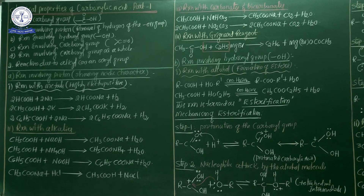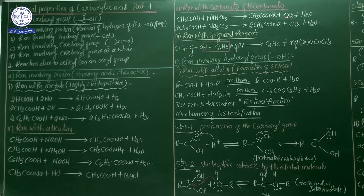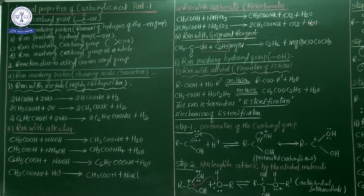If you take a little quantity of carboxylic acid and treat it with either sodium carbonate or sodium bicarbonate, carbon dioxide gas is released — this is the confirmation test of carboxylic acid. For example: CH₃COOH + NaHCO₃ → sodium acetate + CO₂ + H₂O. Also: 2CH₃COOH + Na₂CO₃ → sodium acetate + CO₂ + H₂O.